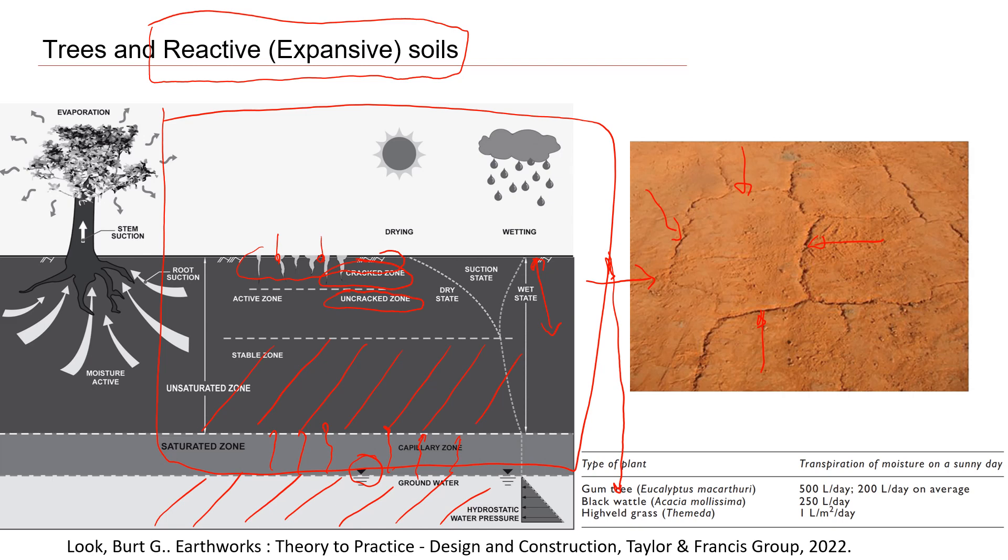You see these cracks and then when we have wetting season, when we have rainfall, all this water will go through the cracks. When it's dry, it will shrink, so it will decrease in volume.